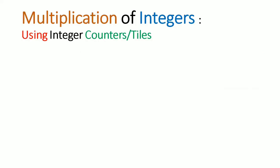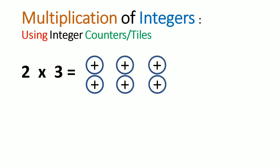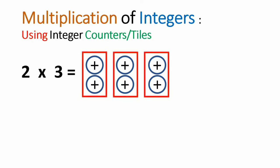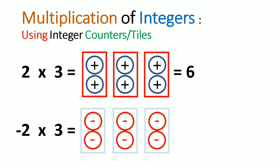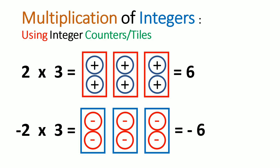Let us now turn our attention to multiplication of integers. If I had 2 times 3, this means I have 2 positive integer counters occurring 3 times. So 2 times 3 is the sum total of all these integer tiles, which is equivalent to 6. But suppose if I had negative 2 times 3 — I will have 2 negative integer counters occurring 3 times. So negative 2 times 3 equals negative 6.